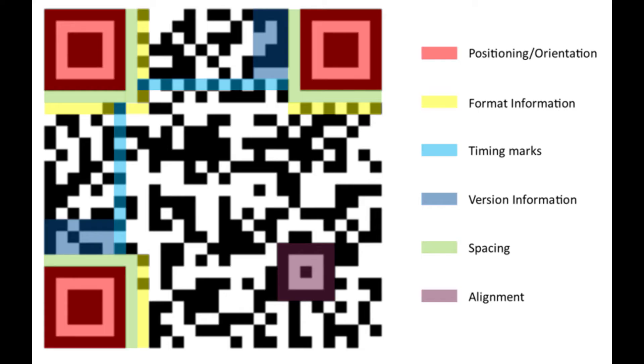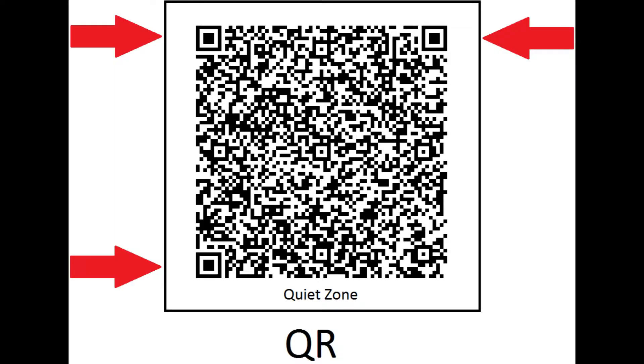First, let us tell you something in general about one-dimensional and two-dimensional barcodes. Although each QR code is different, they contain a few common patterns that enable the barcode scanning module to do the actual scanning. First there is a quiet zone — an empty white border that makes it possible to isolate the code from other printed information. Then there are finder patterns: those black and white squares in three corners that confirm this is a QR code and determine its size and orientation.